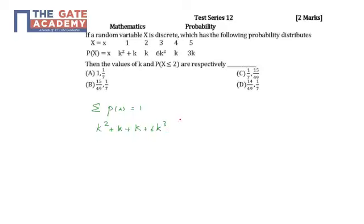Now solving this equation we get two values of k: k is either equal to -1 or k is equal to 1/7. However, since k is a probability value as we can see here, it cannot be negative, so this is not allowed.